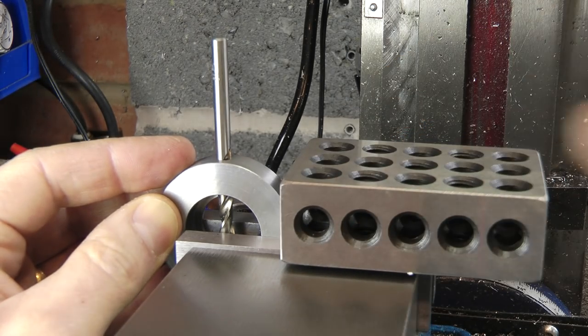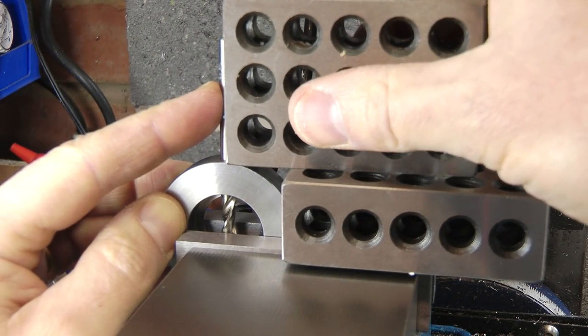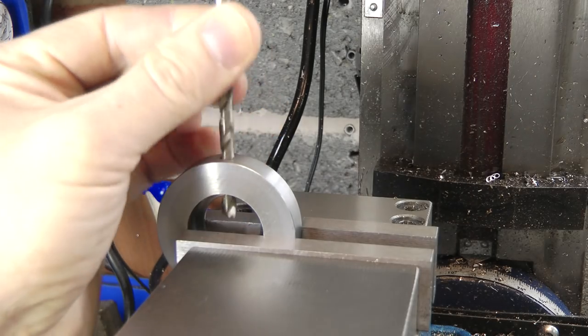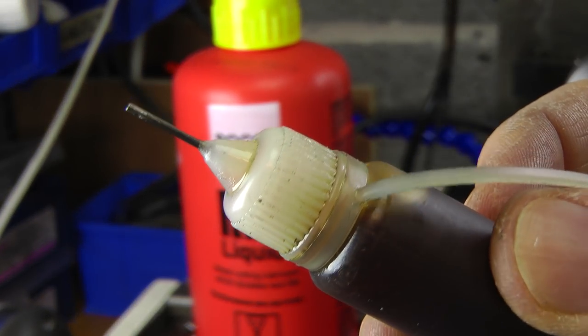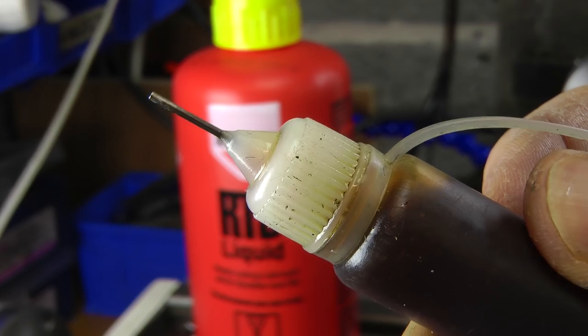I dismantled the assembly and squared up the ring in the vice, ready to tap. Another little tip is to apply cutting fluid from these little bottles to avoid wasting it. They come in handy for all kinds of things.